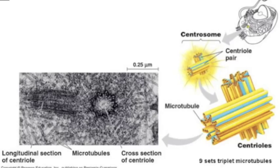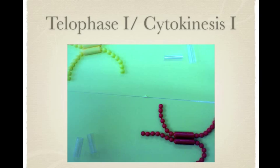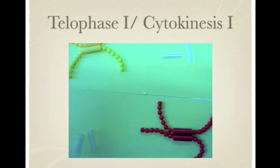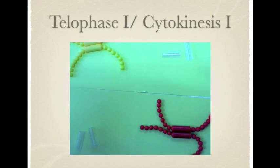Telophase 1 and cytokinesis happen when each half of the cell has a complete haploid set of replicated chromosomes. Cytokinesis usually occurs with telophase, forming two haploid daughter cells.